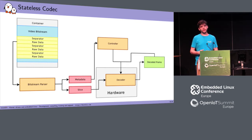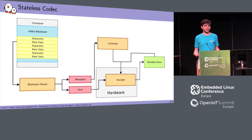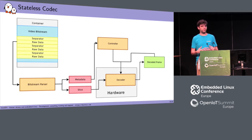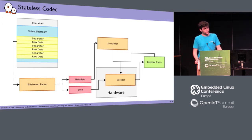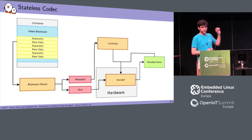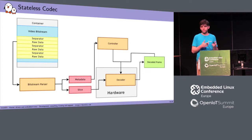The design decision was that bitstream parsing had to be done in user space, because a bitstream is a file from somewhere you basically cannot trust. Parsing it in the kernel is difficult and introduces security issues. So with stateless codecs in V4L2, you have to split everything apart — passing all those controls between the controller and decoder to tune the decoder so it can decode each frame properly.